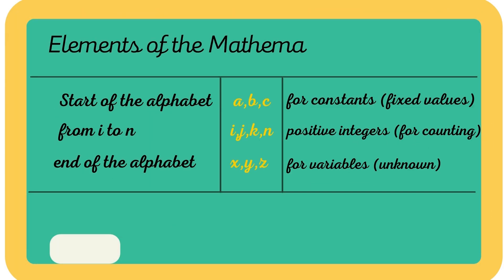Letters often, but not always, have special uses as follows, as you can see in the illustration. For example, the start of the alphabet, A, B, C, is used for constants or fixed values. From I to N, like I, J, K, N, is used for positive integers for counting. And the end of the alphabet, like X, Y, Z, are used for variables or unknowns.